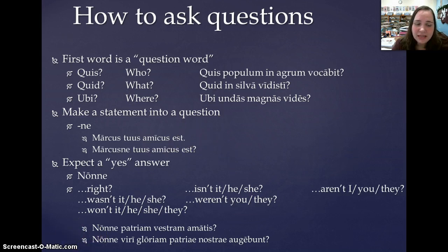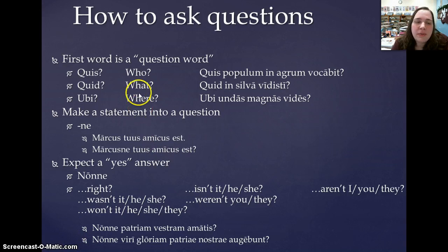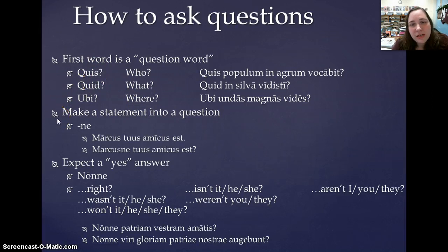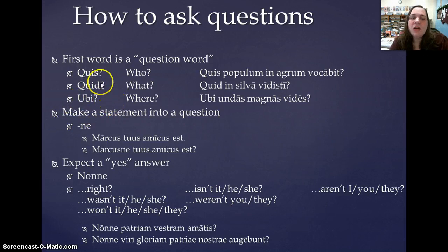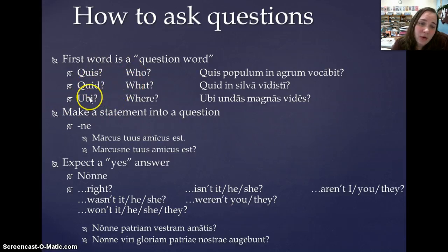The first way is to use a question word — for example, an interrogative pronoun like quis or quid, or an interrogative adverb like ubi. Quis means 'who,' quid means 'what,' and ubi means 'where.'